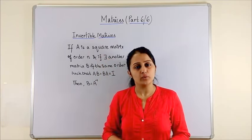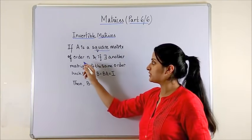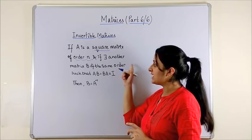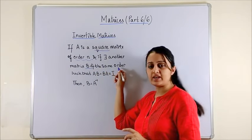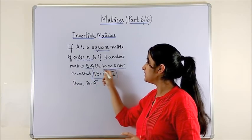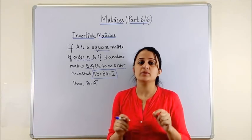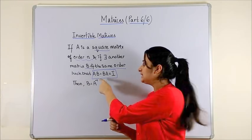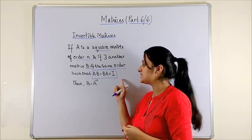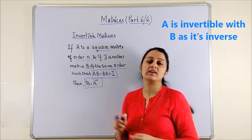Beginning with invertible matrices: if we have A to be a square matrix of order N, and if there exists another matrix B of the same order N, then if AB is the same as BA and it gives us the unit matrix, then AB and BA commute and both give us the identity matrix. Then we say B is A inverse.